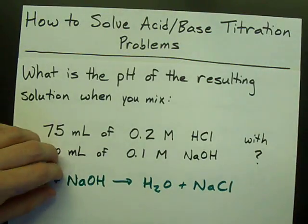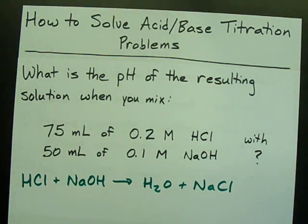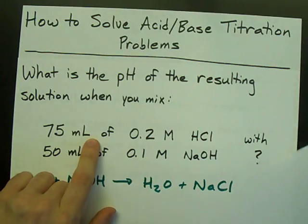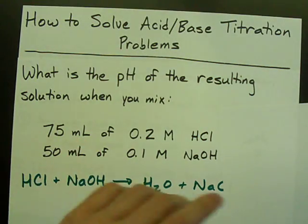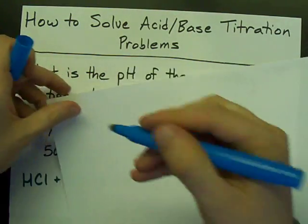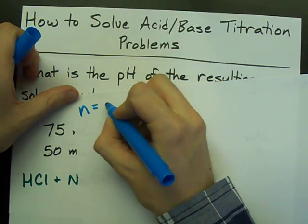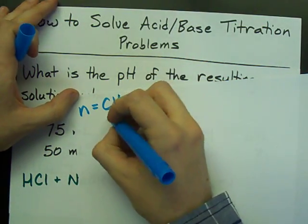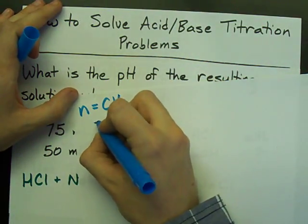Calculate the number of moles of each reactant to start with. How do you find the number of moles of HCl? The answer is the number of moles is the concentration times the volume. So for HCl, the concentration was 0.2 moles per liter.